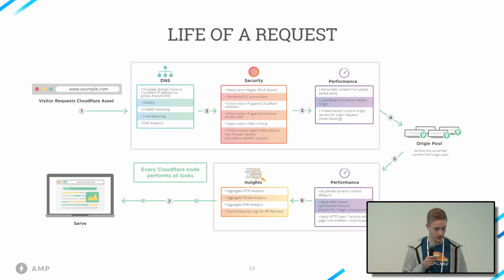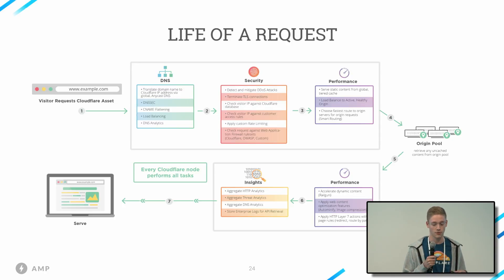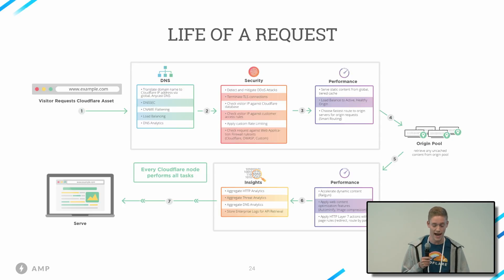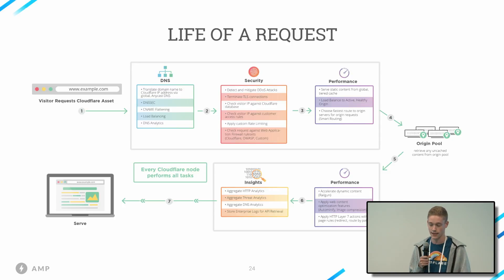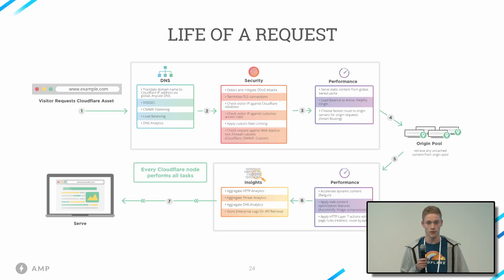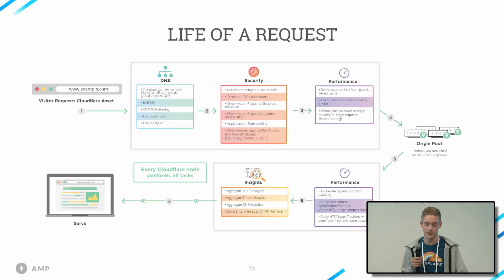The DNS query resolves to our IP address and the request finds the nearest Cloudflare server. From there, we detect and mitigate DDoS attacks and make sure the request isn't known to be malicious. If the request is valid, it continues on to our cache and retrieves static content such as HTML, if someone in that area had recently requested that same content. Then the request goes to your server to get what isn't in the cache and do some business logic. It comes back, and we do a couple more performance enhancements and aggregate insights for you.